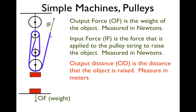Then we have the output distance, OD. That's the distance that the object is raised — that's what you're trying to get out of the machine. You're trying to raise it some distance. It's the distance that the object moves up, because in this case we want to move this thing up. So we go from here to here — that is the output distance.